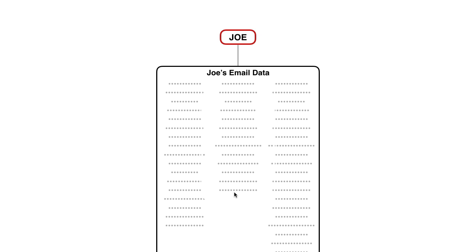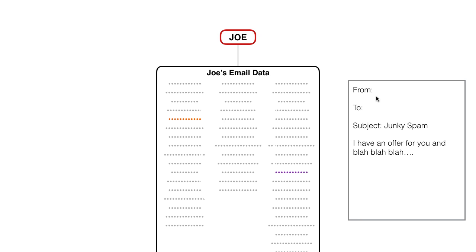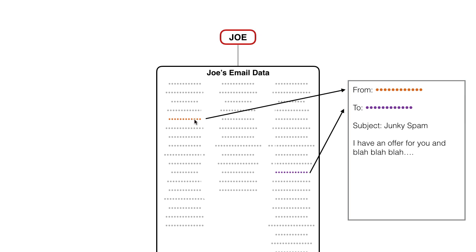So what happens when it sends out spam? It's going to take an email address from Joe's email data — say this one, just at random — then it's going to take another one, and compose an email. That email can have anything in the From and To fields. So it's going to take this orange email address and stick it in the From field, and take this purple one and stick it in the To field. Now you've got an email that could be sent by Joe's computer or by another computer or a server in another country — it doesn't really matter. It makes the email look like it's from the orange person to the purple person, and it's spam.